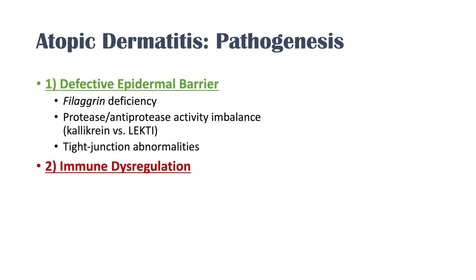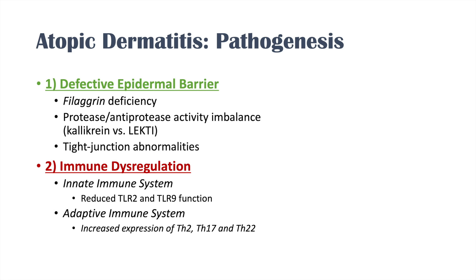The second main pathogenesis category is immune dysregulation. This is divided into innate and adaptive immune systems. With the innate immune system, there is reduced TLR2 and TLR9 function. With the adaptive immune system, there is increased expression of Th2, Th17, and Th22 cytokines. These two areas — defective epidermal barrier and immune dysregulation — are all associated with the onset and symptomatology of atopic dermatitis.